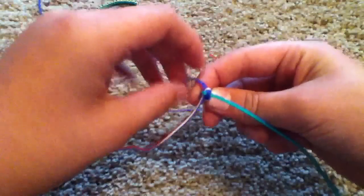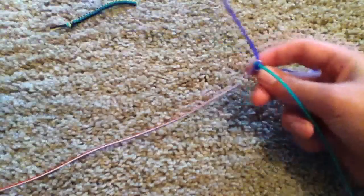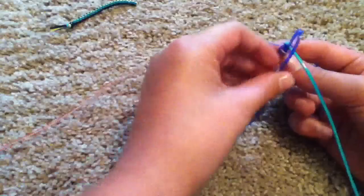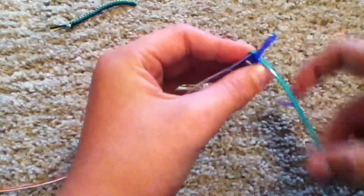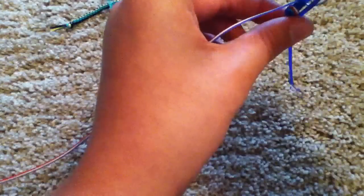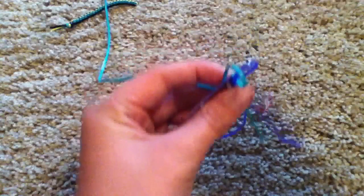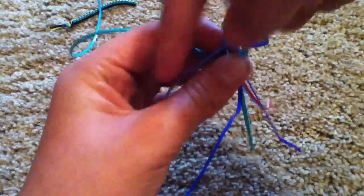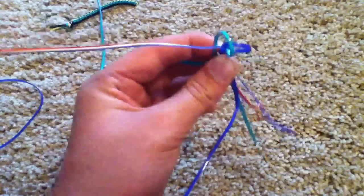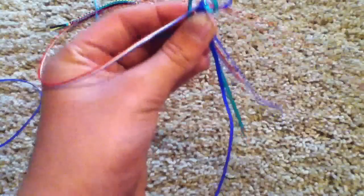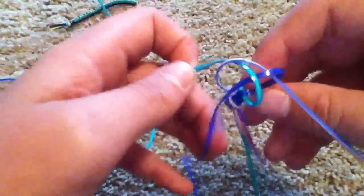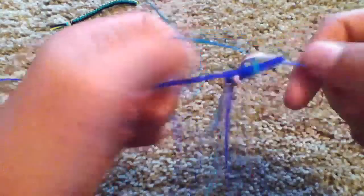So, since I did my loop on the red last time, this time I'm going to do it on the green. Make a loop over the green. Take the green loop over the blue and on top of the red. And then take the red over the green and through the blue. And then pull.